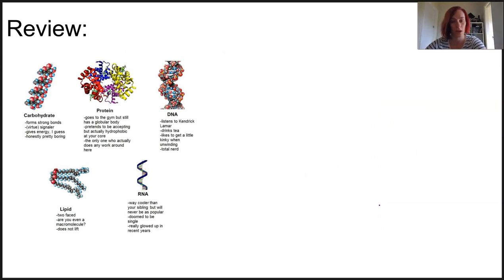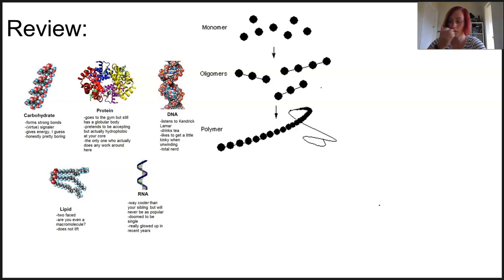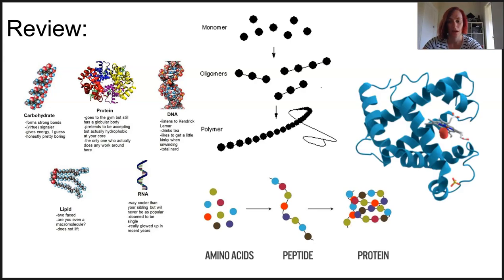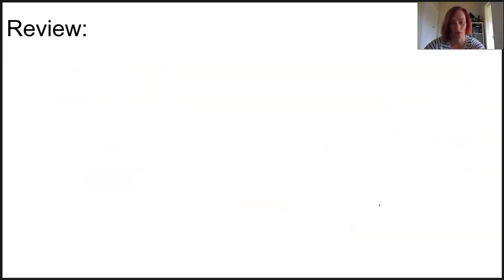We know that enzymes are one of the four types of macromolecules. They are proteins and like all macromolecules they're made up of a single type of unit — a monomer — that repeats over and over to form a polymer. In proteins the monomer is an amino acid, which repeats to form a polypeptide or protein. This polypeptide folds around itself and perhaps around other polypeptide chains to form a protein, and enzymes are specific types of proteins.